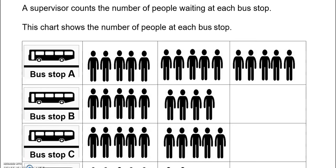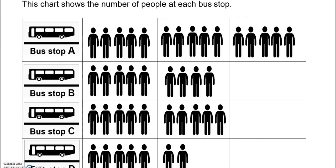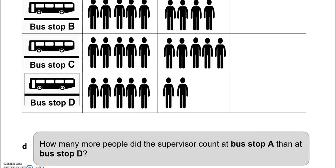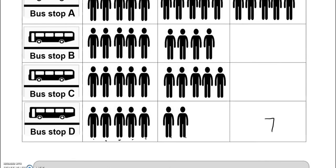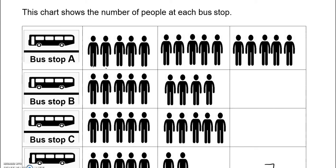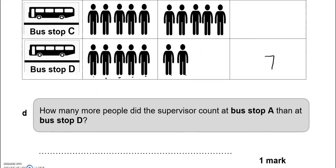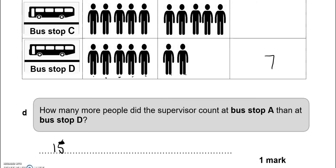A supervisor counts the number of people waiting at each bus stop. This chart shows the number of people at each bus stop. How many more people did the supervisor count at bus stop A than at bus stop D? So we're comparing these two. So in D we've got 1, 2, 3, 4, 5, 6, 7 people. In A we have 8, 9, 10, 11, 12, 13, 14, 15. So 15 take away 7 gives us 8. So 8 more.